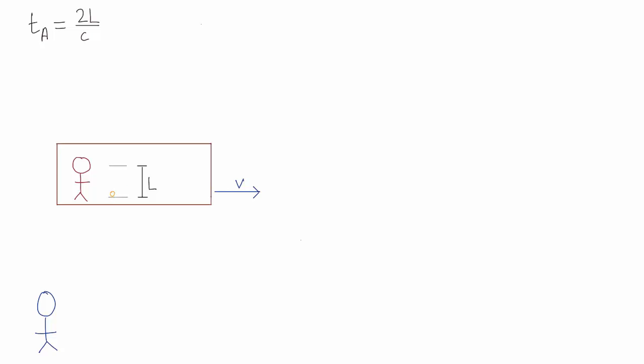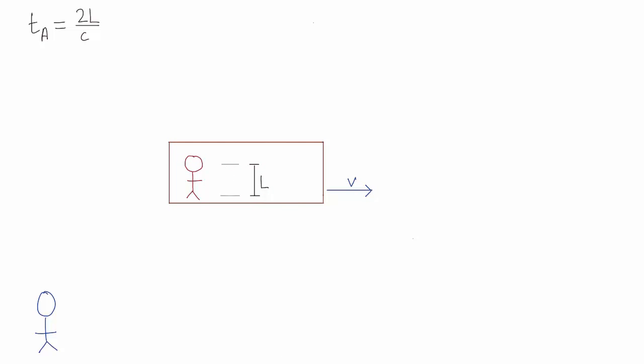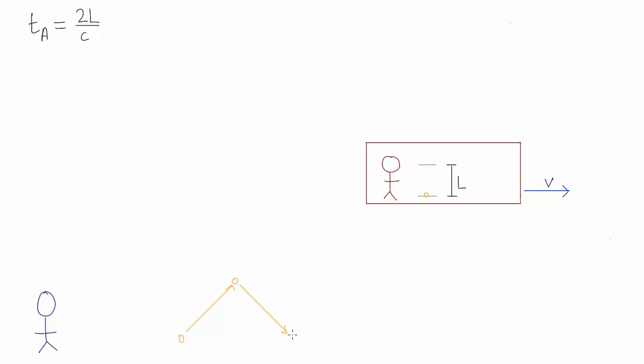So the photon starts off over here, but the light clock is carried along by the train as it moves. So it hits the upper mirror here and then returns to the lower mirror completing the tick here. So from Bob's point of view, the path of the photon through the clock looks like this.